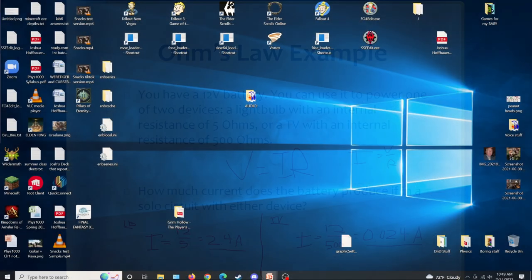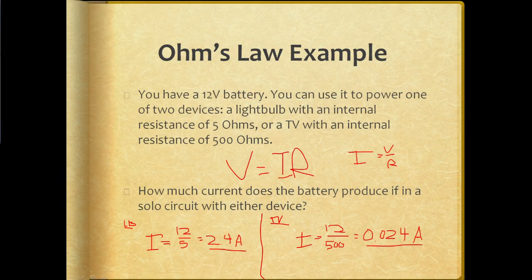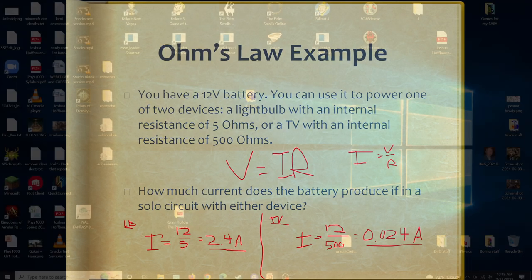We're going to constantly be referring back to that trio of voltage, current, and resistance as we continue through the rest of this chapter. Tomorrow we'll cover some more things related to electrical resistance and look back at the formula about how resistance is calculated. Wednesday we'll start looking at resistor circuits — how resistors work together in circuits and the voltage-current-resistance relationship for more complicated circuits. And at the end of the week we'll cover the concept of electrical power.